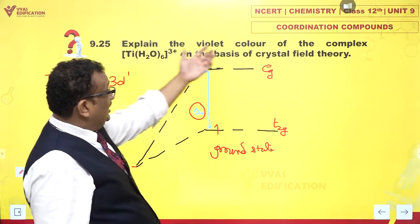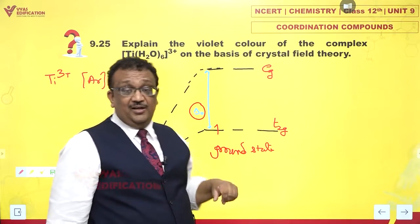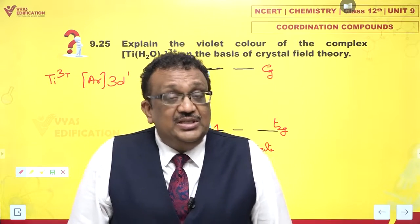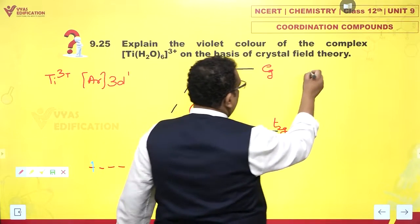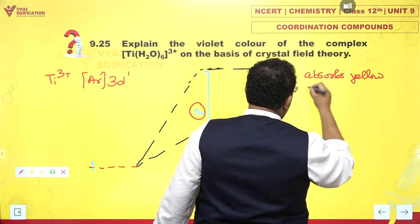I am told that the color appears violet. Why? If the color appears violet, the complementary color of violet is yellow. So that means this complex absorbs yellow photons.